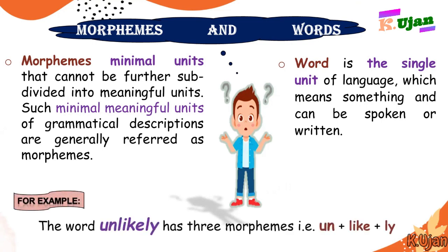Here is a clear example: the word 'unlikely'. 'Unlikely' is actually a word — it has meaning and is made up of three morphemes: 'un', 'like', and 'ly'. So this word is composed of three units. A word is a single unit having a single meaning, but morphemes are the units within the word. These are the areas of morphology known as morphemes and words.